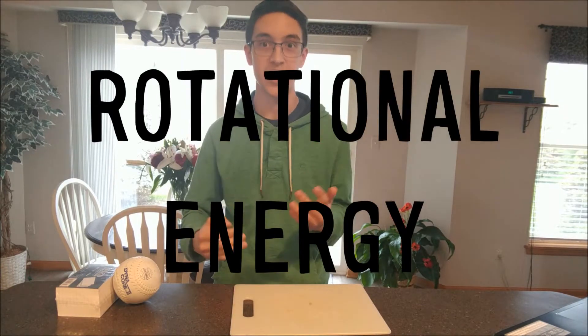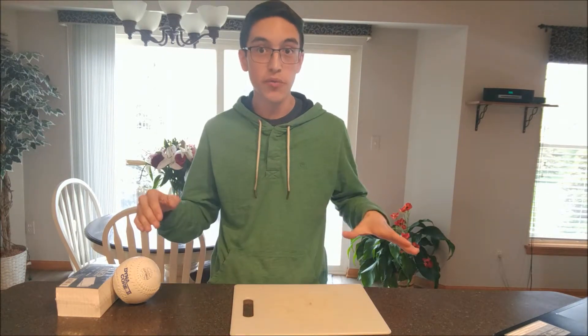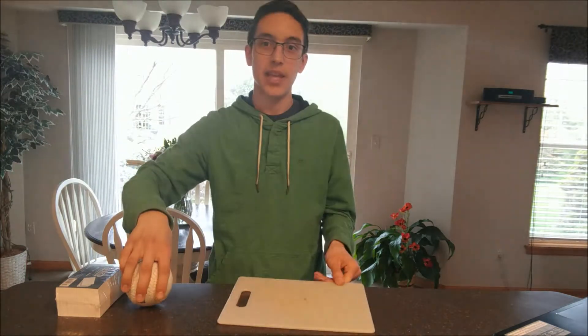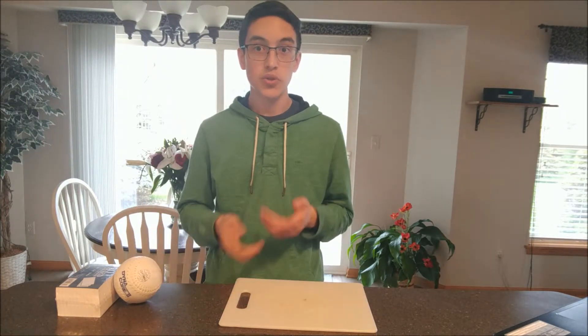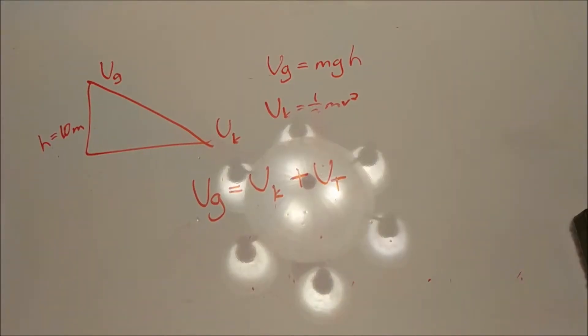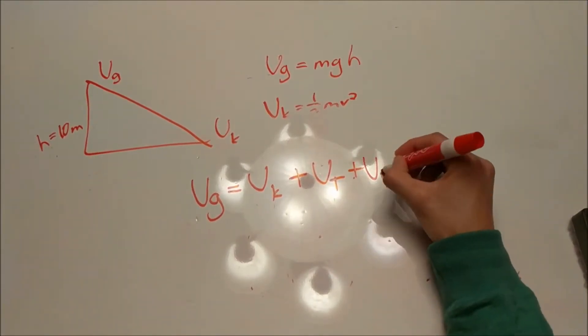But wait — there's still one type of energy we forgot to account for: rotational energy, also known as angular kinetic energy. It is kinetic energy caused by the rotation of an object. Remember, there was friction on the hill. If there was no friction at all, the wheels on my bike wouldn't roll — they would just slide down. However, on a surface with friction, the wheels roll due to the resistance caused by the friction. So we have to update our equation yet again: our gravitational potential energy equals our kinetic energy plus our thermal energy plus our rotational energy.